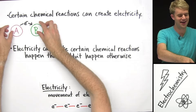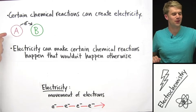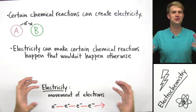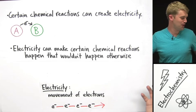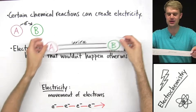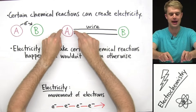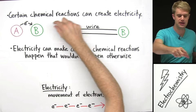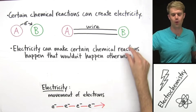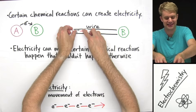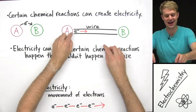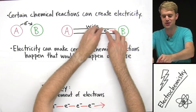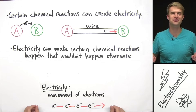Here I've got an oxidation-reduction reaction where electrons are moving from A to B. How can I use this to create electricity along a wire? Well, what we could do is separate A and B. We know that electrons want to move from A to B, so if we separate them with a wire, the electrons moving between these atoms will have to travel through the wire — they'll be moving through that wire — and we've got electricity.